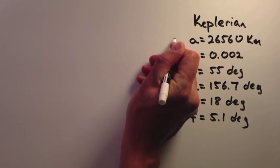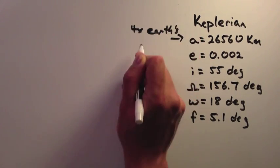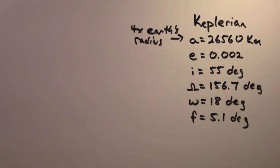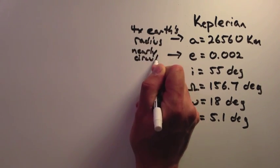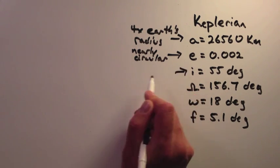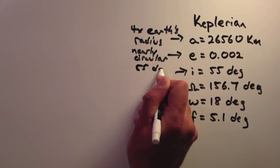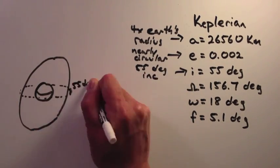By looking at the first three Keplerian elements, you can get a pretty decent idea of what the orbit looks like. The radius of the Earth is 6,378 kilometers, so the semi-major axis is about four times the size of the Earth. By looking at the eccentricity, we can tell that the orbit is nearly circular, and we can see that the inclination is nearly 55 degrees. Using this information, we can draw the general shape of the orbit.